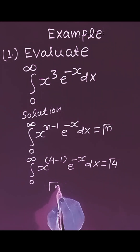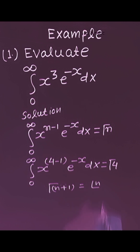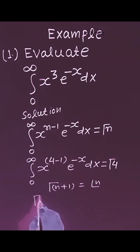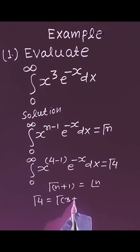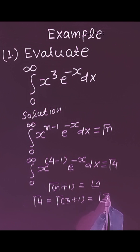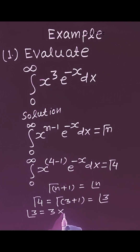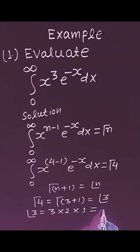Now we know that gamma of n plus 1 is equal to n factorial. So the value of gamma 4 will be equal to gamma of 3 plus 1, which equals 3 factorial. And 3 factorial equals 3 times 2 times 1, which equals 6. So the value of the given integral is equal to 6.